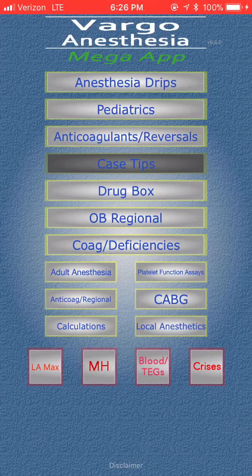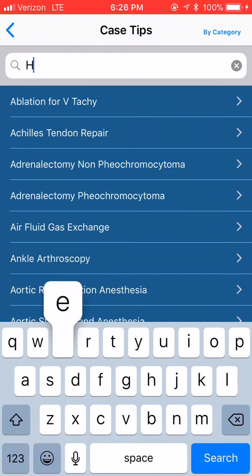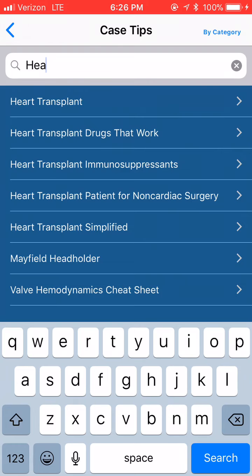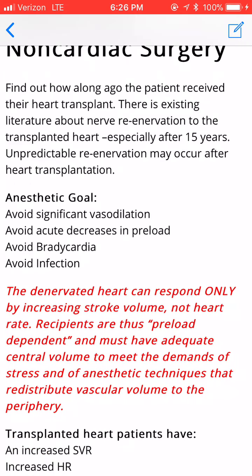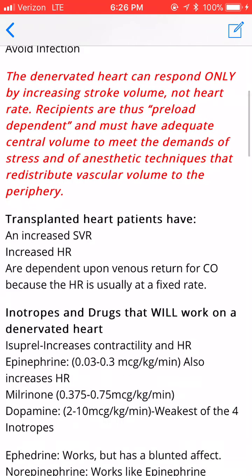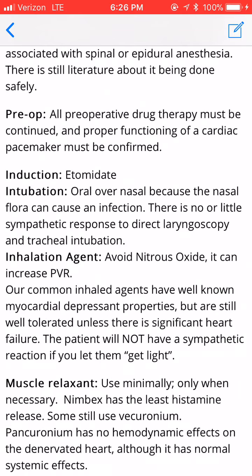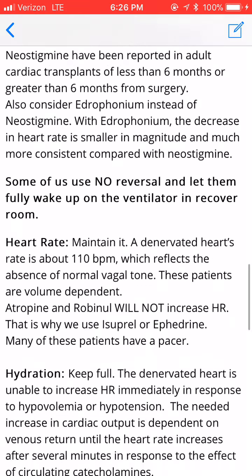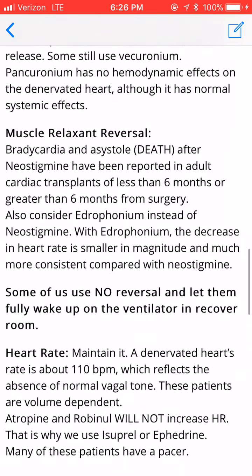So you're going to go to Case Tips, and you have a search engine up top, and you're going to type in "heart," and before you even get there, you're going to see your selection of heart transplantations. So you're going to hit Heart Transplant Patient for Non-Cardiac Surgery. There's your information — it talks about how they de-innervate, how the preload is very important, drugs that will work or not work, how to treat bradycardia, hypotension, issues with neostigmine, and et cetera. So that's done right there in seconds.